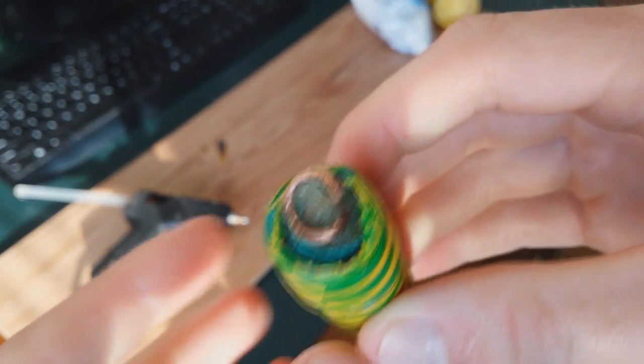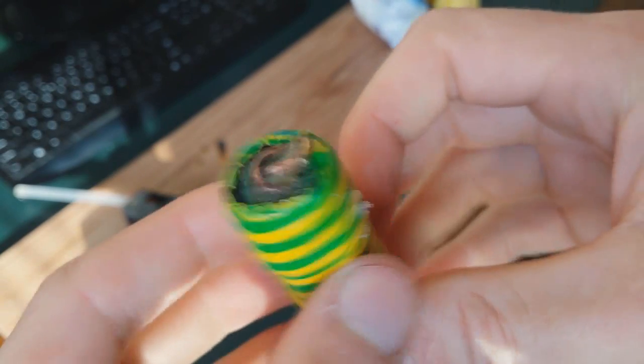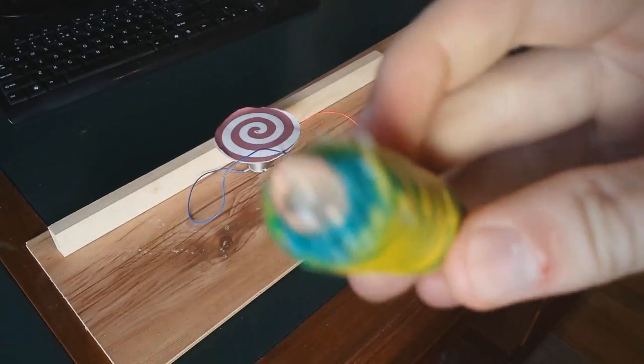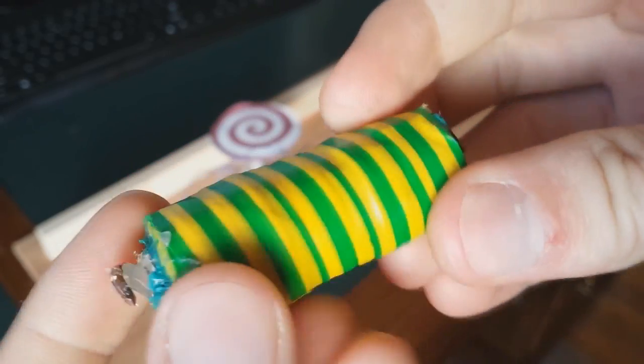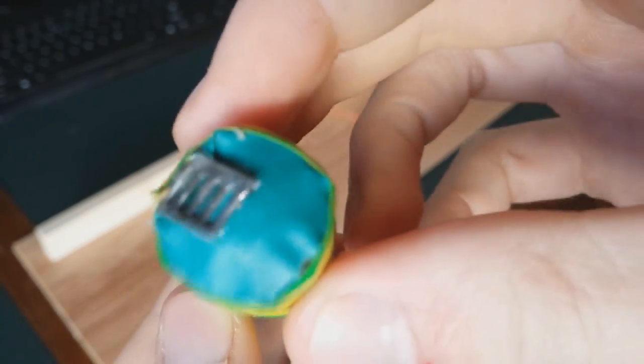As you can see, the resin is sitting inside of the coil. I have finished my battery. The battery is closed up with hot glue on both sides.